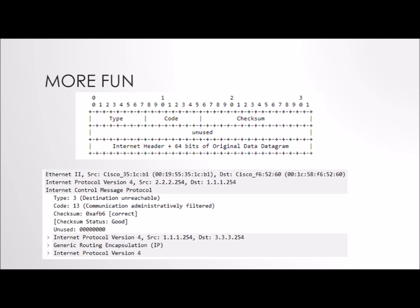We wouldn't be complete if we didn't show the encapsulation or the header. The top image there is the header that's part of the RFC — they all share a basic header, but then the type or the code tells us what's actually in the message or what kind of message we're dealing with. Then there's that 64 bits of the original datagram plus the IP header of the original datagram. There's an actual example of an IP packet that is a destination unreachable.